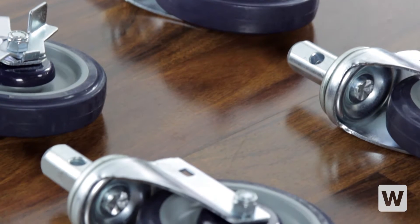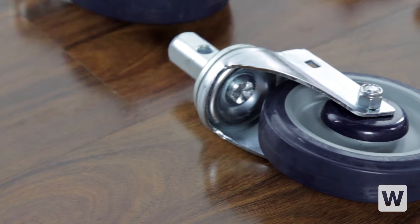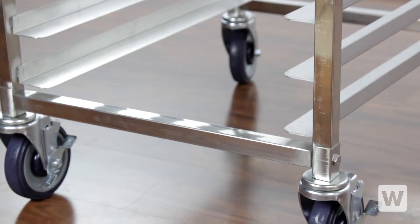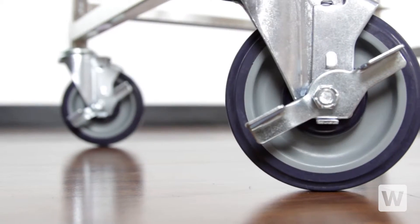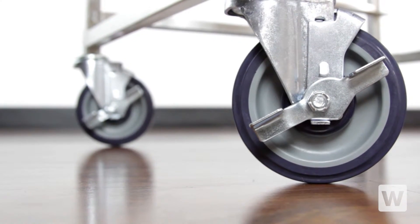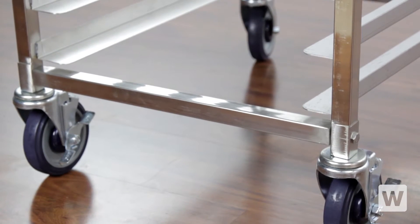And thanks to its heavy duty 5 inch polyurethane swivel casters, moving the rack around your kitchen or business is easy. Since two of the casters have brakes, you'll be able to keep the rack where you want it and hold it steady during loading and unloading. Polyurethane casters like these also roll quietly and won't leave marks on your floors.